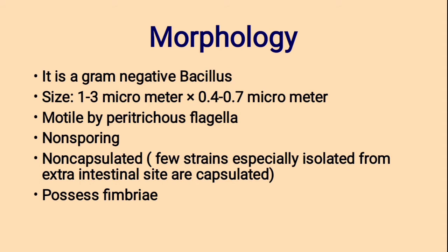Morphology. E. coli is a gram-negative bacillus. Size: 1–3 micrometers in length and 0.4–0.7 micrometers in breadth. They are actively motile by peritrichous flagella. Non-sporing and non-capsulated, but a few strains especially isolated from extra-intestinal sites are capsulated. They possess fimbriae.